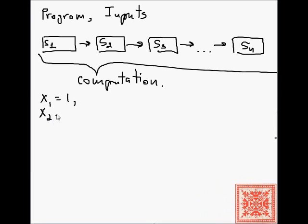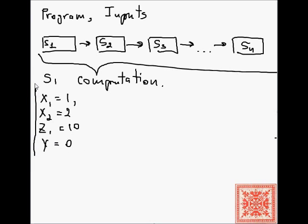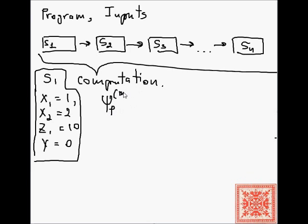A computation by definition is finite — it has a physical beginning and a physical end. A snapshot is basically a sequence of equalities, each stating the specific value of a specific variable. All variables must be mentioned in the snapshot, and also the instruction which is about to be executed.